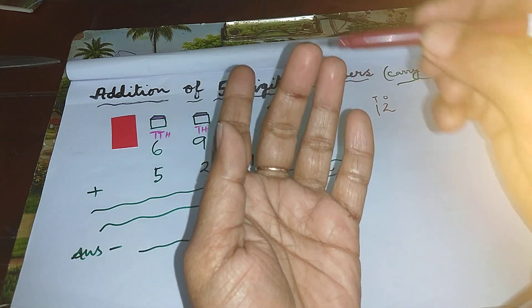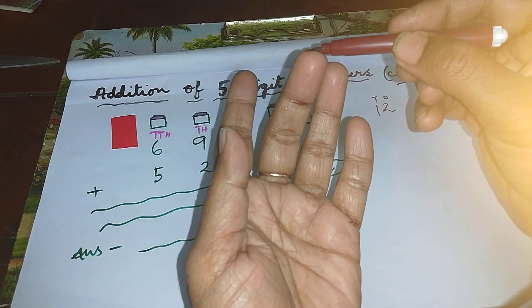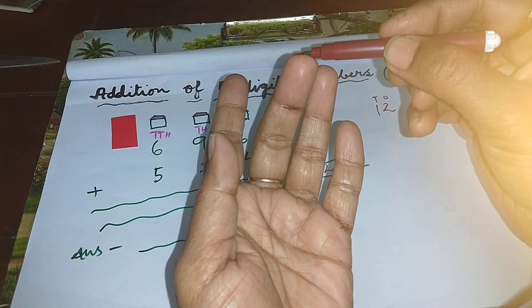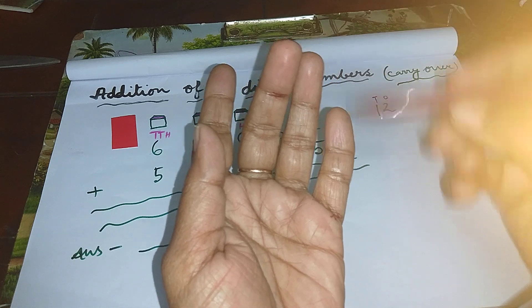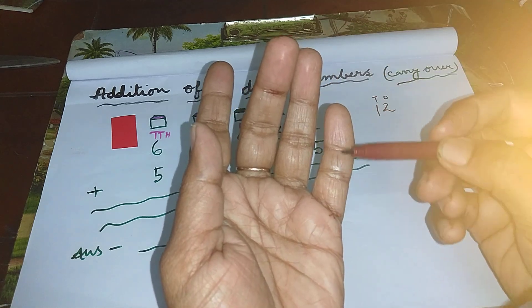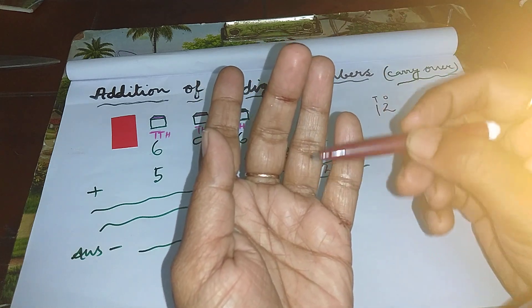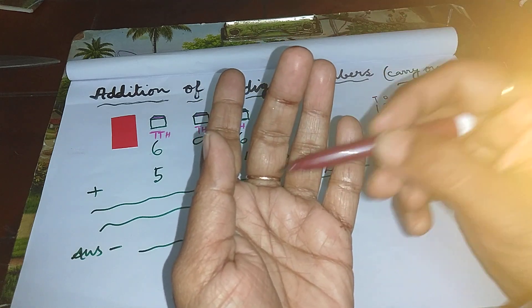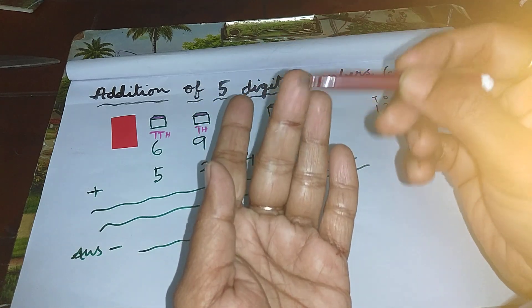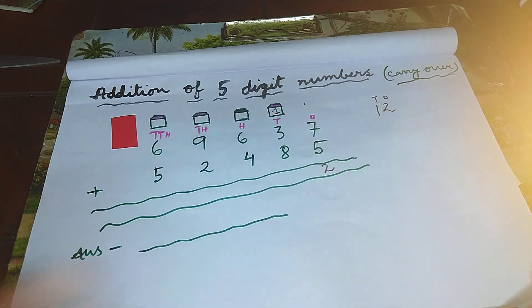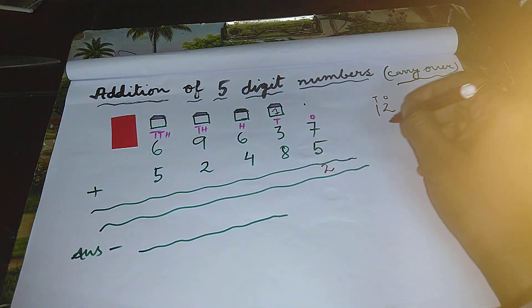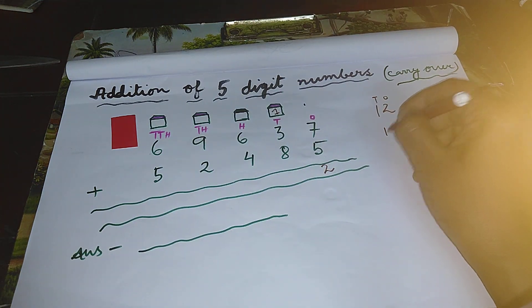From here to here, total how many lines are there in all? One, two, three, four, five, six, seven, eight, nine, ten, eleven, twelve. Again, twelve comes.